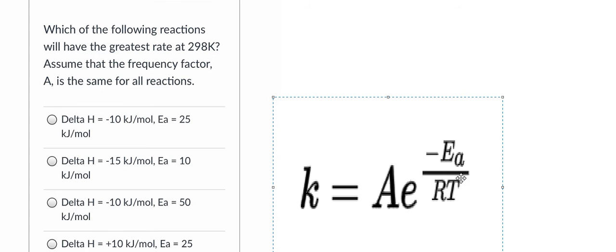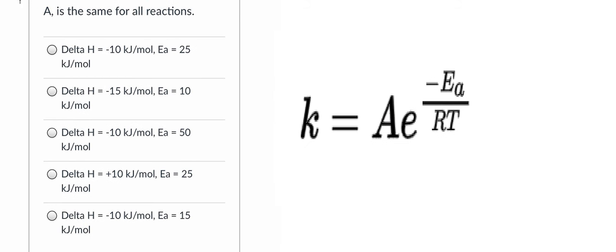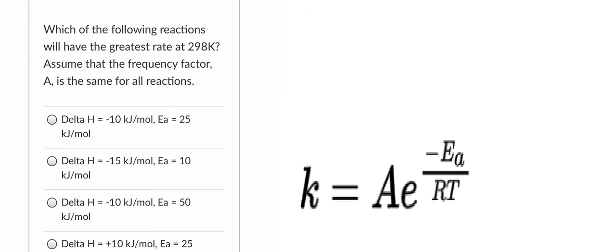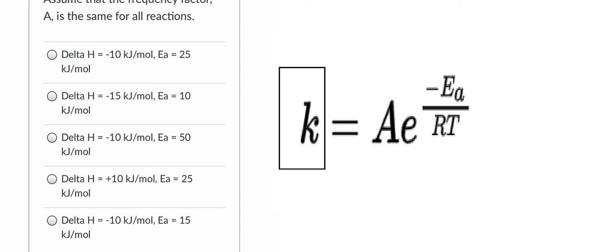To get the greatest rate, that's about k, we need to consider Ea, which is the activation energy. To get the greatest k means k goes up.